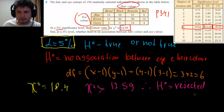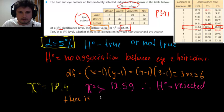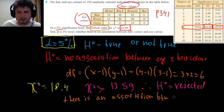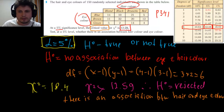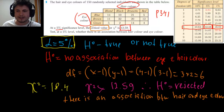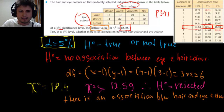In other words, there is an association between hair color and eye color. The answer is yes — there is an association, because our chi-square was higher than the critical value of 12.59 allowed for a significance level of 5%.